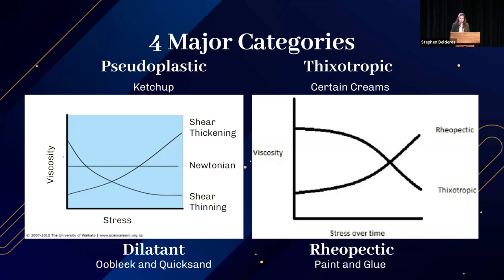The two other main categories are thixotropic and rheopectic. Both have viscosities that change with stress, but based on the duration of stress. For thixotropic fluids, the longer shear stress is applied, the lower the viscosity becomes, meaning the fluid flows faster over time. Examples include peanut butter, glue, yogurt, and some paints. Rheopectic fluids are the opposite — the longer stress is applied, the thicker they become. Examples include gypsum paste and printer ink.